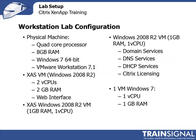Workstation lab configuration: I understand that not all of you are going to have access to a server, so the server option is straightforward. For the workstation lab, for about 95–98% of this series, I'm going to be on a workstation with a quad-core processor, 8GB of memory, Windows 7 64-bit, and VMware Workstation 7.1 as a Type 2 client hypervisor to virtualize the following virtual machines.